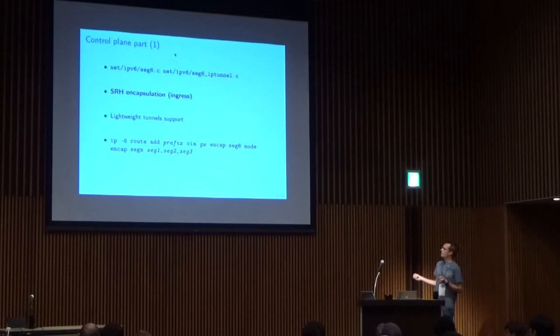The control plane part is implemented with lightweight tunnels. You can specify classifications with the classical IP route command. Let's say, for example, you want some prefix to be encapsulated. You just specify the encapsulation mode which is segment routing, and you specify a list of segments that you want to insert onto the packets. This will work for either locally emitted packets or forwarded packets.